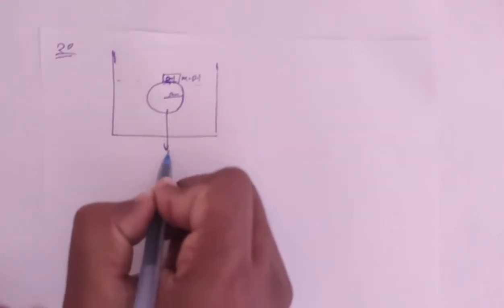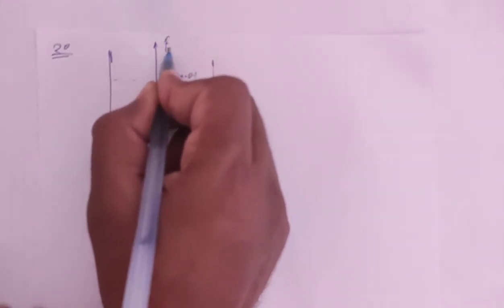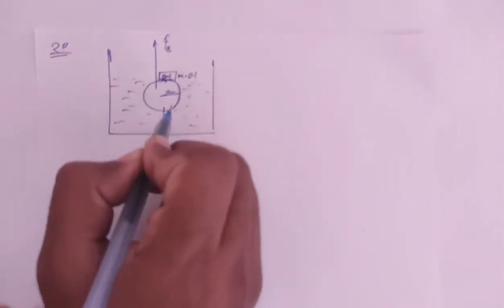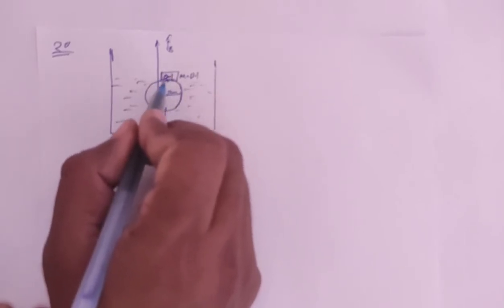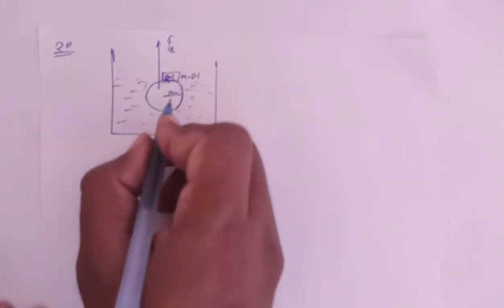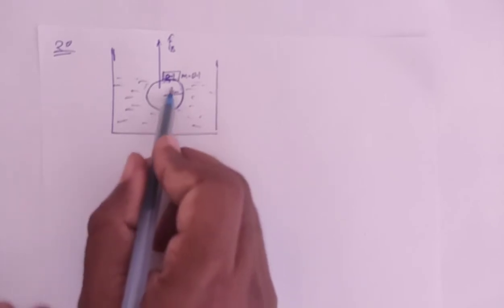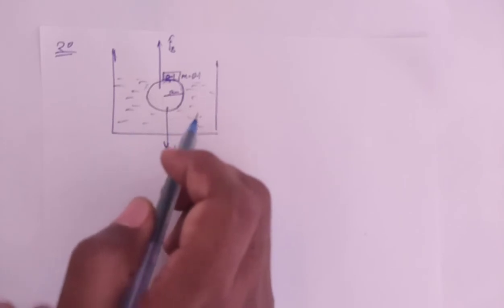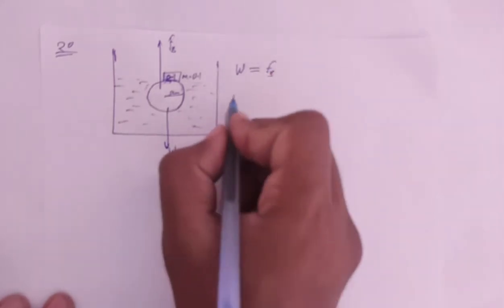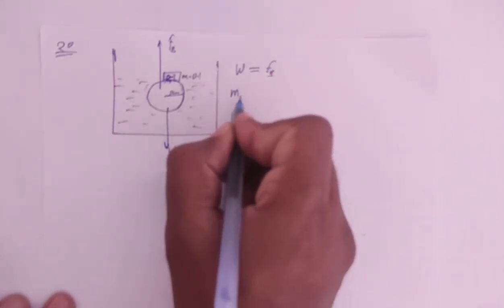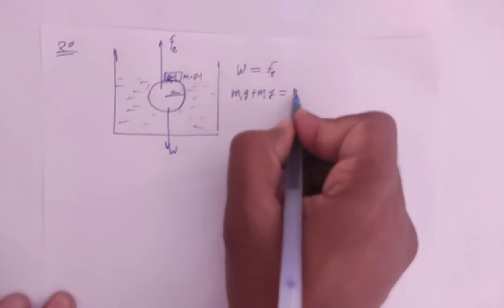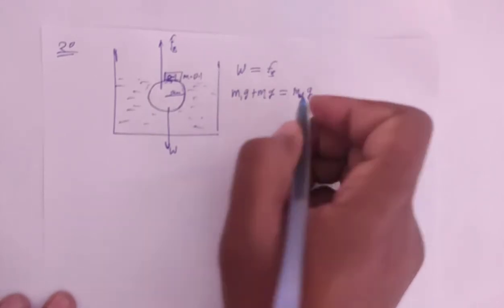So below is the weight and above is the buoyant force. The buoyant force is due to the water displaced — as much as the volume of this sphere. The weight difference is only due to the sphere volume and mass. So we can say weight equals buoyant force: M1·g plus M2·g due to the sphere equals the weight of the water displaced.